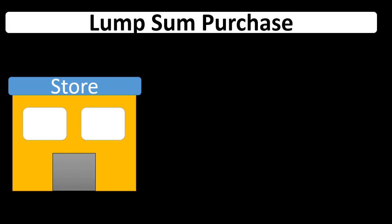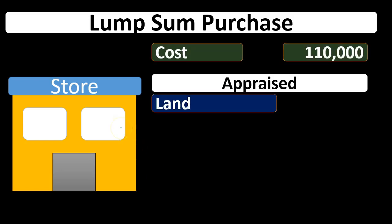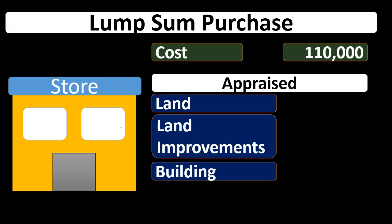It's important to note that we need to break these components out. For example, if we have a cost of $110,000 for the purchase of a store which includes land, improvements, and building, we need to break these out because they have different depreciable lives. We want to categorize them differently so that we know the value of the land versus the building, and we're going to allocate the cost over the useful life in different ways.